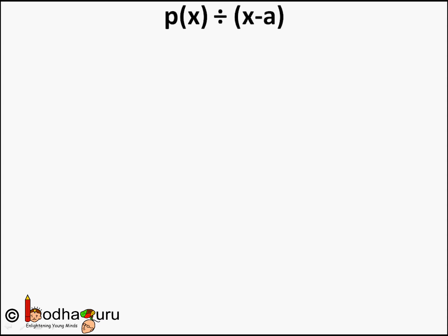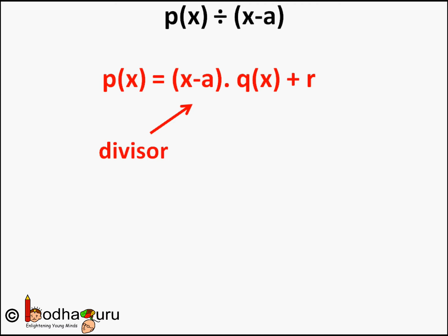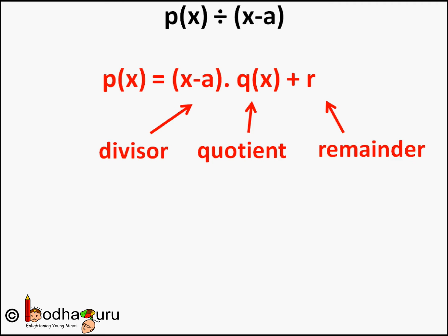Something similar applies to polynomials too. Let us revise a few things we have learnt in our earlier videos. We learnt that when dividing a polynomial p(x) by a linear polynomial (x − a), we represent it as: p(x) = (x − a), which is the divisor, multiplied by q(x), which is the quotient, plus r, which is the remainder.